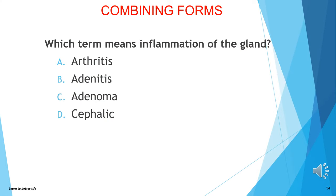Let's test your knowledge. Which term means inflammation of the gland? A) arthritis, B) adenitis, C) adenoma, or D) cephalic? The answer is B, adenitis. Adeno- means gland, and -itis means inflammation.